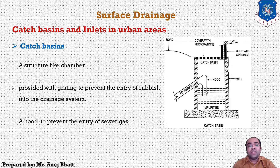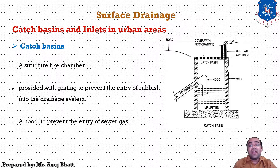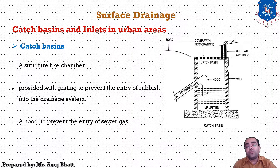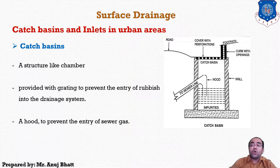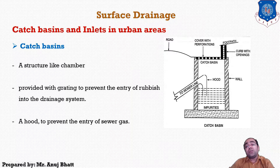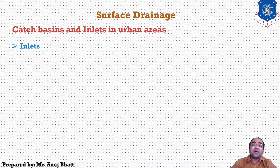The water collected in the catch basin is discharged to the sewer drain. The catch basin is provided with netting to prevent the entry of rubbish into the drainage system. Impurities in the water are collected at the bottom of the catch basin, which is to be cleaned regularly. A hood is provided in the catch basin to prevent the entry of sewer gas, so that bad smell cannot come into the catch basin.